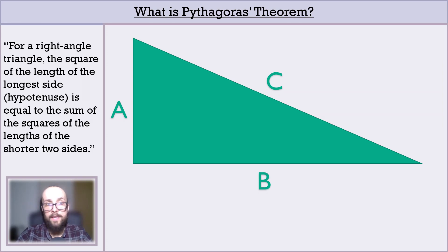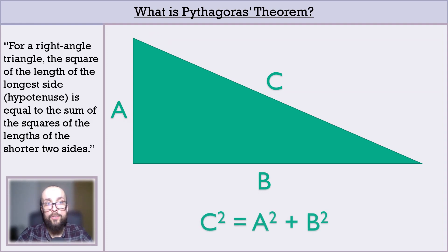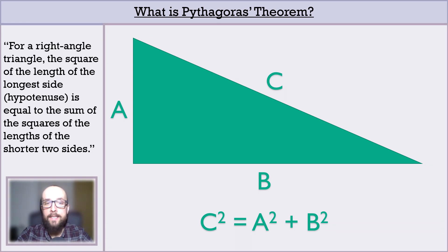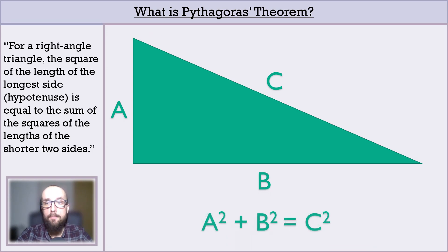To translate Pythagoras' theorem into those labels: the length of the longest side squared, so C squared, is equal to the shortest side squared — A squared — plus the next shortest side squared — B squared. C squared equals A squared plus B squared. This is usually rearranged just a little bit, with C squared going after rather than before the equals sign, which leaves us with A squared plus B squared equals C squared.